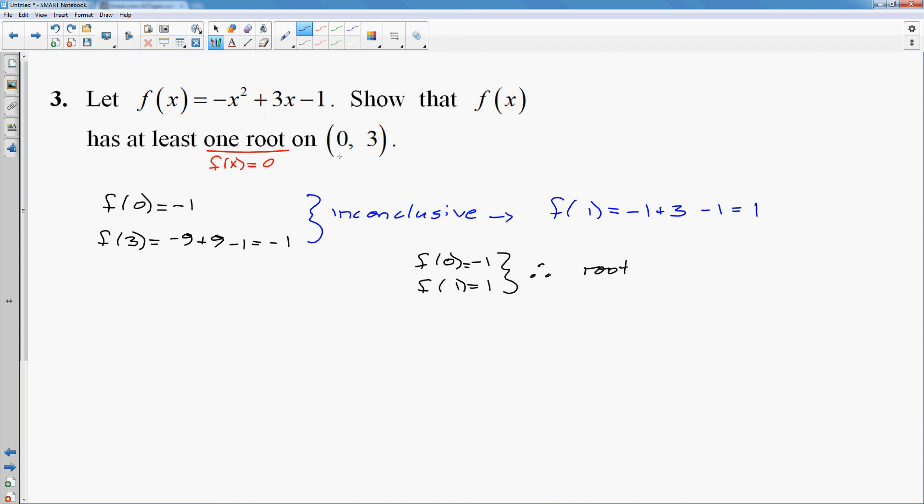Now the problem is specified on the interval 0 to 3, but we can be a little bit more specific. There is a root on the interval 0 to 1. And we could even say that since f of 3 is negative 1, that means there's another root on 1 to 3. Because f of 1 was positive, f of 3 was negative, therefore we had to hit the x-axis somewhere on the journey.